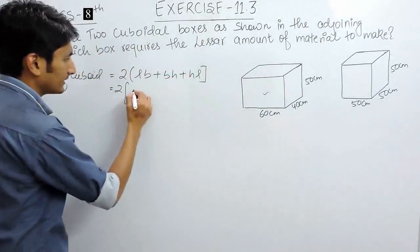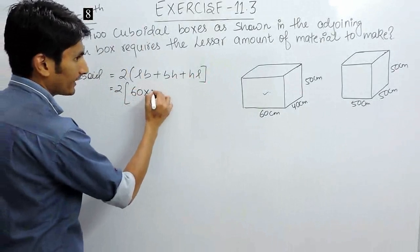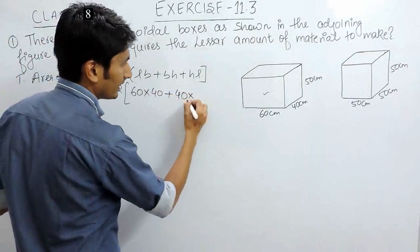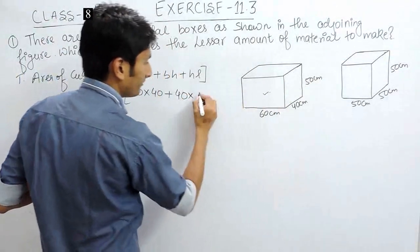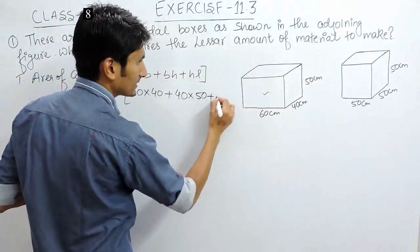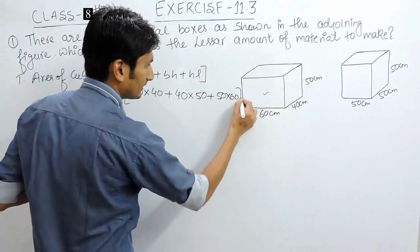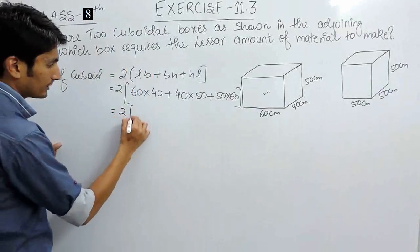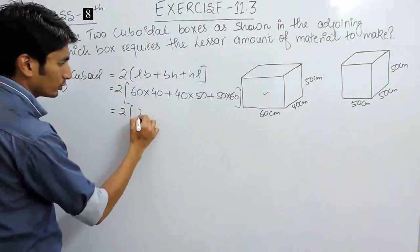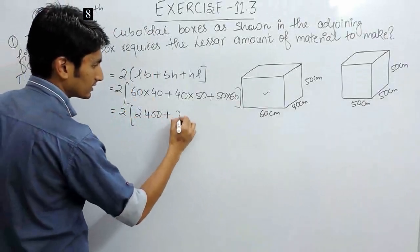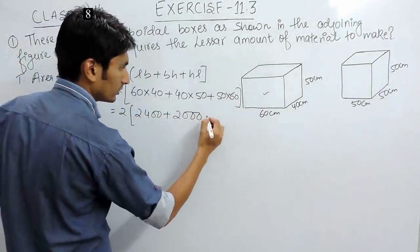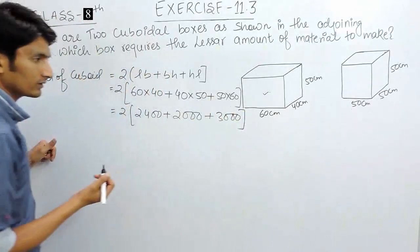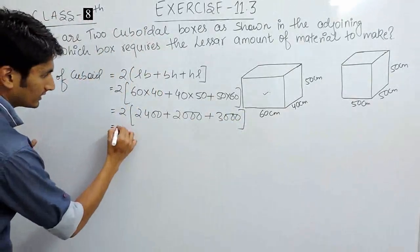length is 60 centimeters, breadth is 40 centimeters. Breadth is 40 centimeters and height is 50 centimeters, plus height is 50 and length is 60. Solving this, this is twice multiplied with, this is 2400, this is 2000, and this is 3000.